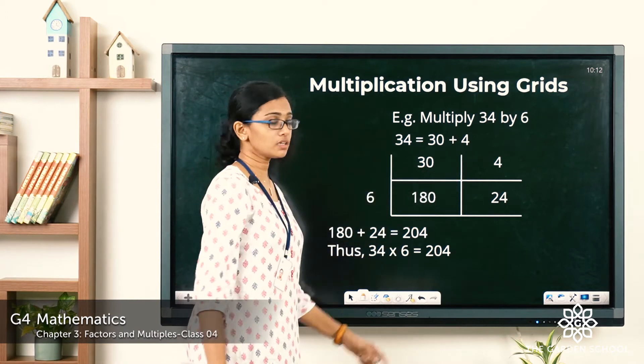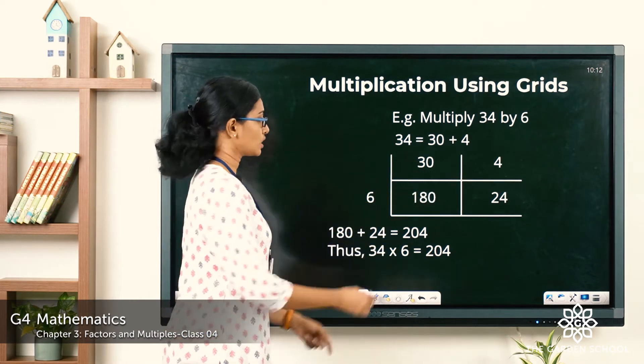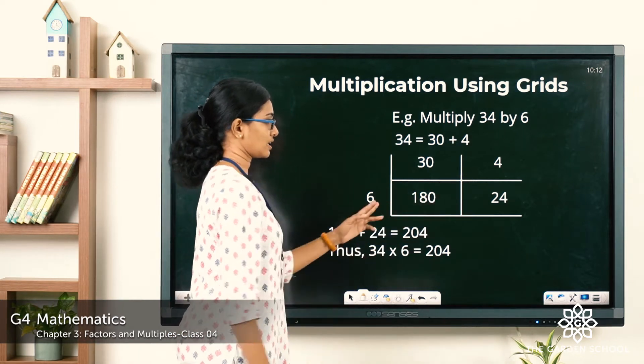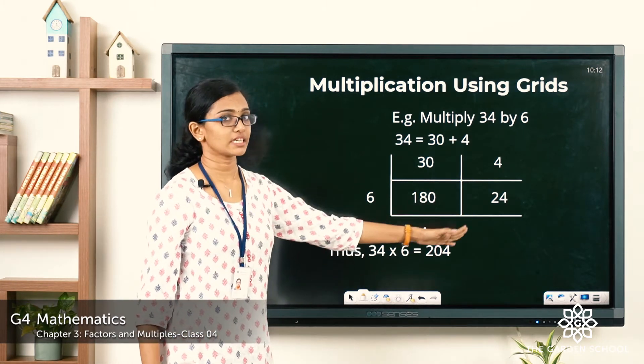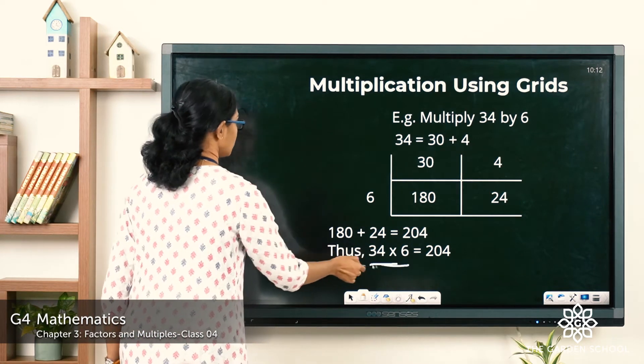First you split the number 30 plus 4, then you draw the numbers in a grid, then you multiply each number and you add up all the products that you get. And the final answer would be the result to 34 into 6.